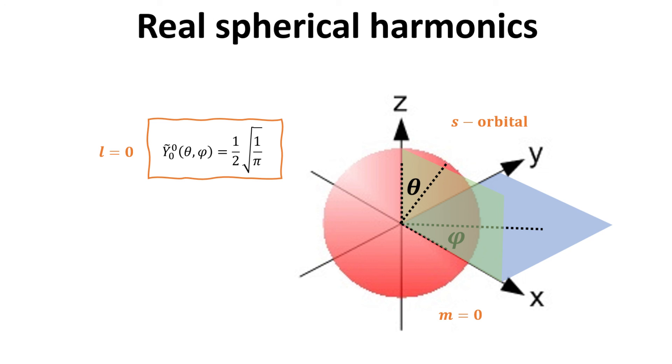For l equals 0, we have only one spherical harmonics as shown. It is a constant. Thus, the function y 0,0, when plotted as function of theta and phi, traced out the surface of a sphere. Often, this spherical harmonics is called the s orbital.